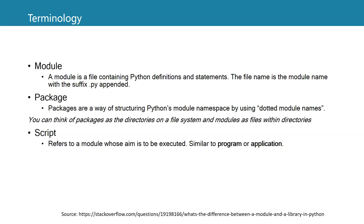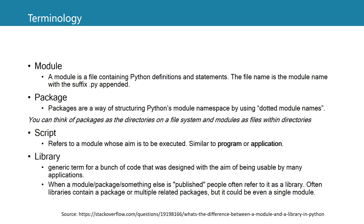Then we have scripts, which are basically a bunch of code lines that you execute. We can also call it a program or an application. A library is a more generic term for a bunch of code designed to be usable and reused by many applications. When we publish a module, a package, or something else, we refer to it as a library. Often these libraries contain a package or multiple related packages, but it could also be a single module.